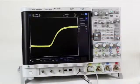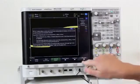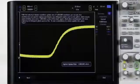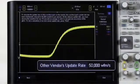In fact, the 4000X has a built-in demo that can show you how the 4000X's update rate compares to slower update rates. Here, you can see an update rate of 50,000 waveforms per second, 20 times slower.